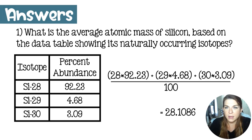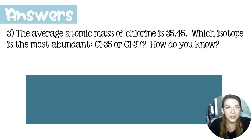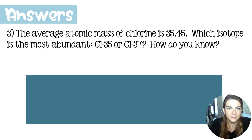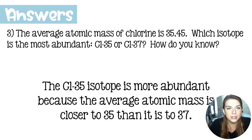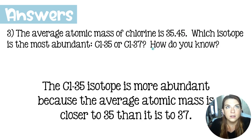Most of the time you're asked to set up these questions rather than solve them, because the answers are on the periodic table. Now here's another question: the average atomic mass of chlorine is 35.45. Which isotope is most abundant — chlorine-35 or chlorine-37 — and how do you know? Chlorine-35 must be more abundant because the average atomic mass is closer to 35 than to 37. If it were a 50-50 split, the average would be 36. So chlorine-35 has to represent more than 50% of the population.